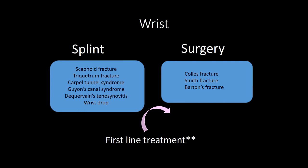Guyon's canal syndrome involves the canal formed by a ligament connecting the pisiform to the hamate, which contains the ulnar nerve. Symptoms include numbness and tingling in the ulnar nerve distribution, often from repetitive trauma such as cyclists gripping handlebars or swinging golf clubs. Treatment is NSAIDs, splinting, and surgery for decompression. De Quervain's tenosynovitis is overuse of the extensor pollicis brevis and abductor pollicis longus. Finkelstein's test — ulnar deviation of a fisted hand reproduces the pain. Treatment is splinting and NSAIDs. Wrist drop is treated with splinting in wrist extension and is due to radial nerve compression.